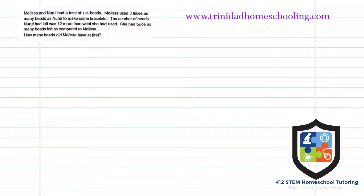In this question, Melissa and Neural had a total of 106 beads. Melissa used three times as many beads as Neural to make some bracelets. The number of beads Neural had left was 12 more than what she had used. She had twice as many beads left as compared to Melissa. The question asks how many beads did Melissa have at first.